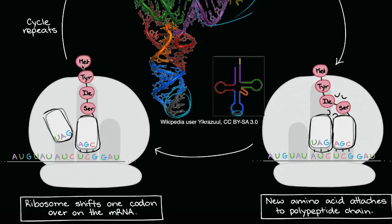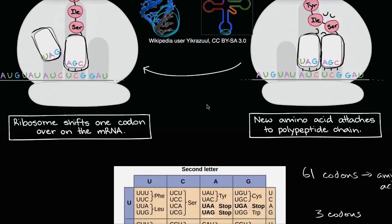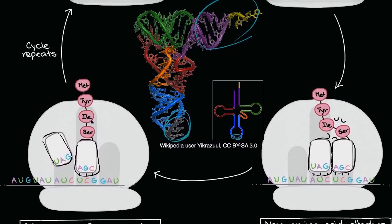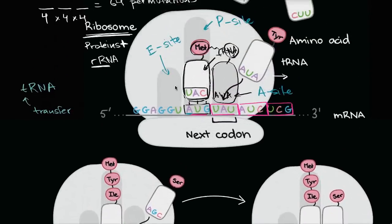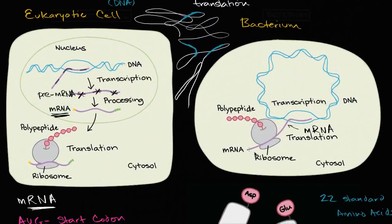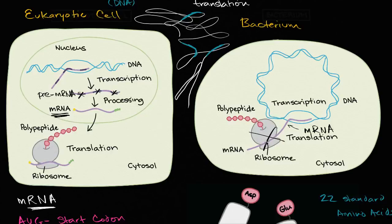This keeps happening until we reach one of the stop codons. When the ribosome hits a stop codon, the polypeptide is released and we have created something that could be a protein or part of a protein. This is happening in your cells as we speak. Interestingly, antibiotics work because ribosomes in prokaryotes are different enough from ribosomes in eukaryotes that we can find molecules that disrupt ribosome function in prokaryotes but not in your own cells — so antibiotics can disrupt the translation process in bacteria without harming your cells.